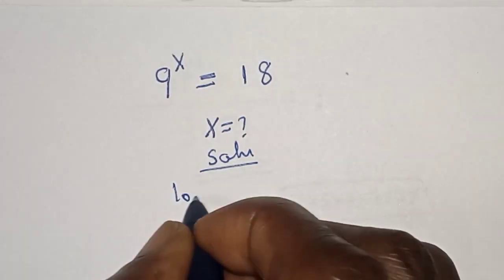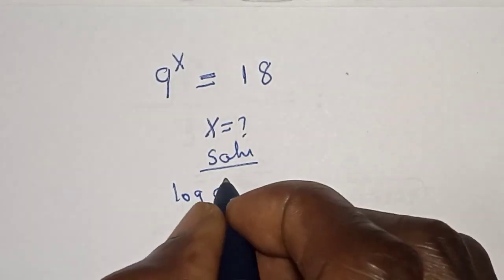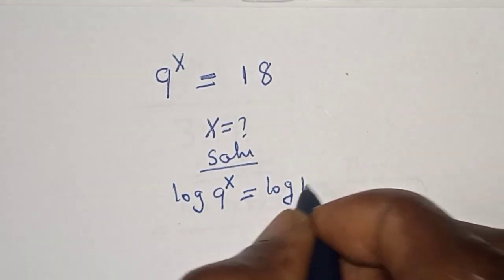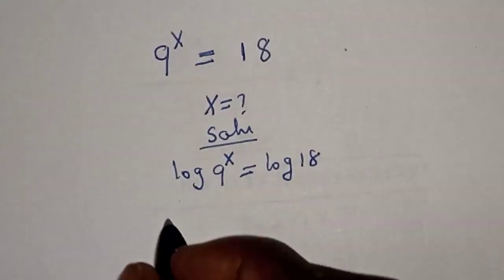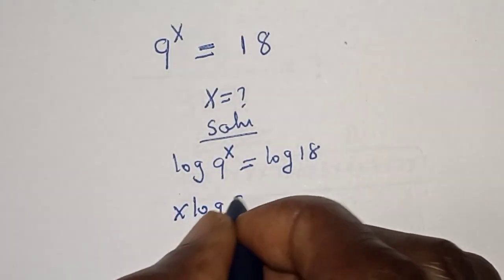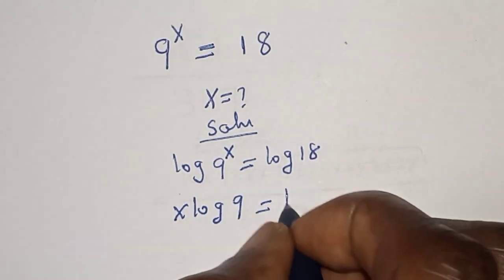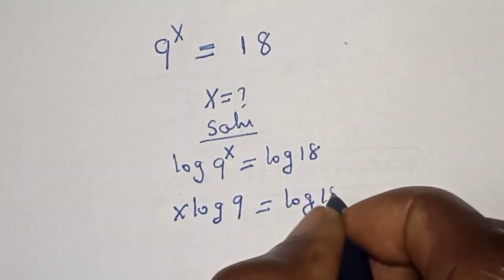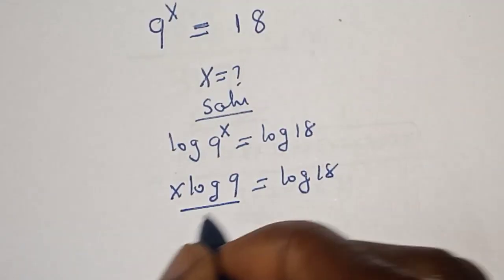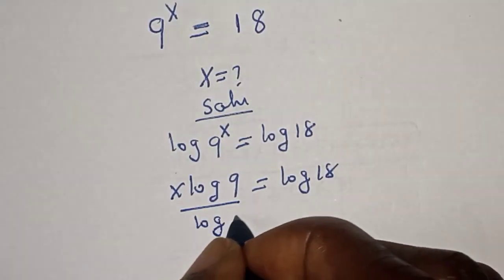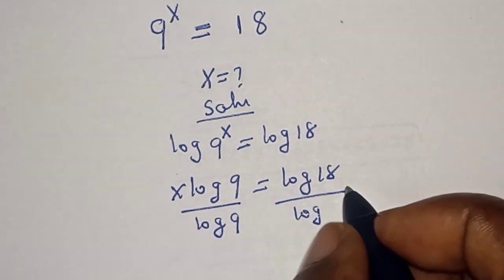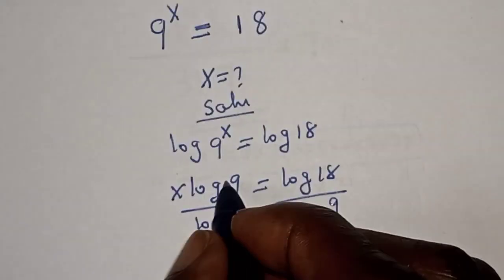Solution: let's take the log of both sides. Log of 9 to the power of s is equal to log 18, and we have s times log 9 is equal to log 18. Now divide both sides by log 9.